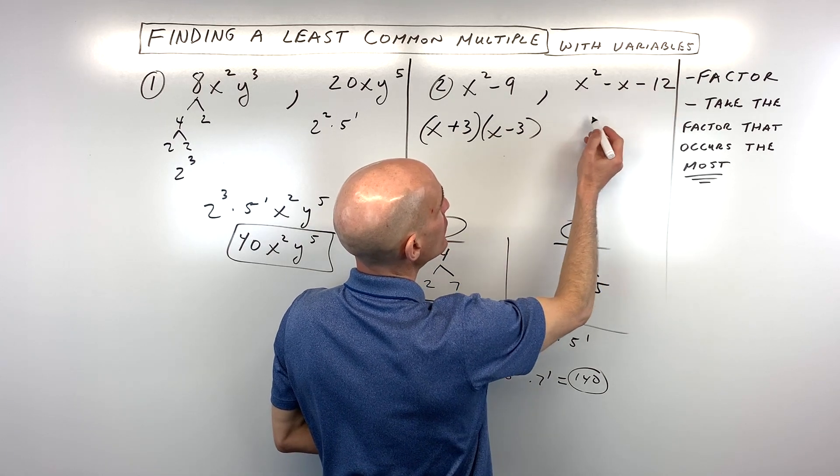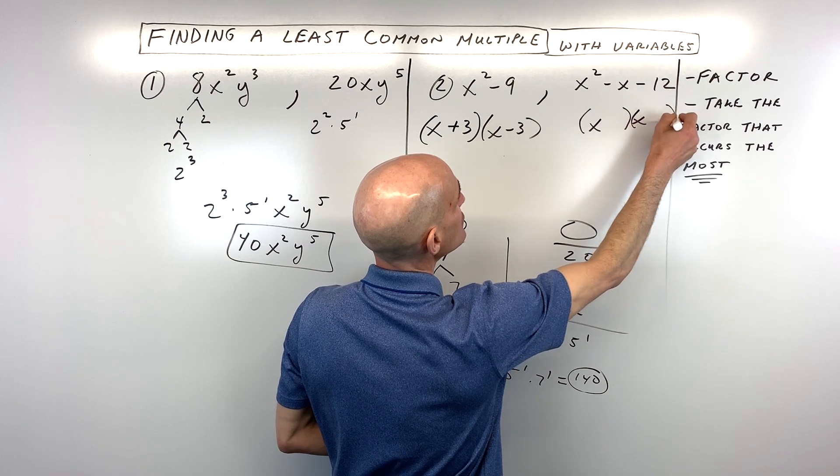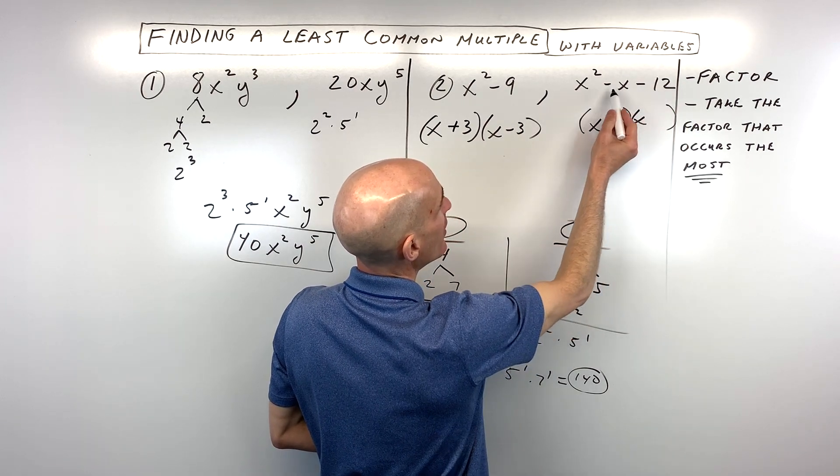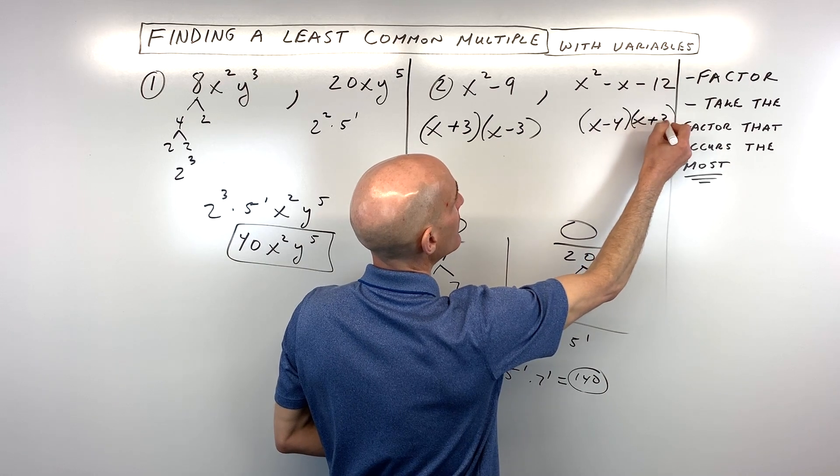Over here we have a trinomial with a leading coefficient of 1. We just have to ask ourselves, what two numbers multiply to negative 12 but add to negative 1? That's going to be negative 4 and positive 3.